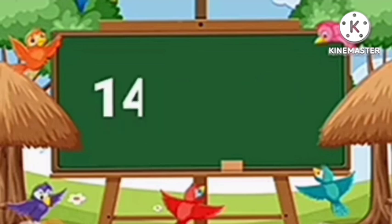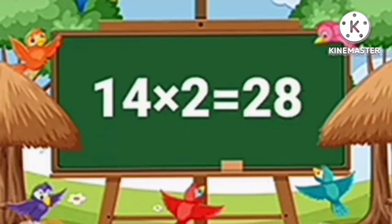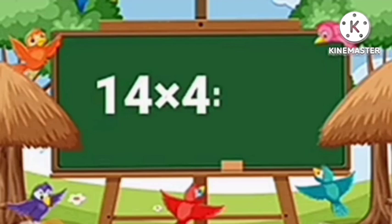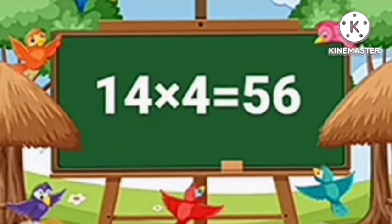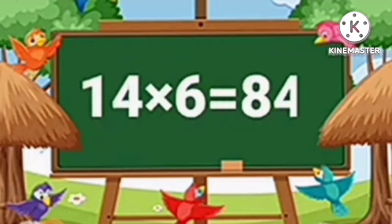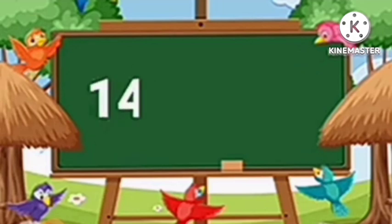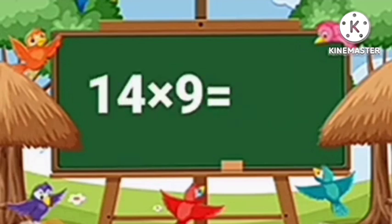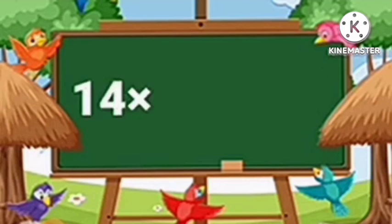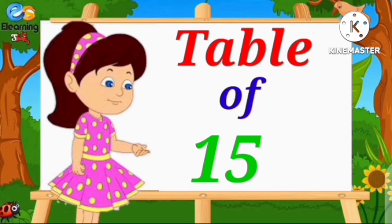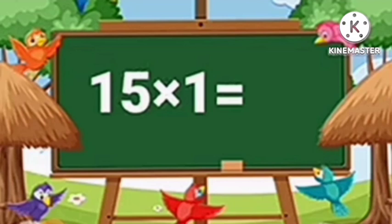Table of Fourteen. Fourteen ones are fourteen. Fourteen twos are twenty-eight. Fourteen threes are forty-two. Fourteen fours are fifty-six. Fourteen fives are seventy. Fourteen sixes are eighty-four. Fourteen sevens are ninety-eight. Fourteen eights are one hundred twelve. Fourteen nines are one hundred twenty-six. Fourteen tens are one hundred forty.